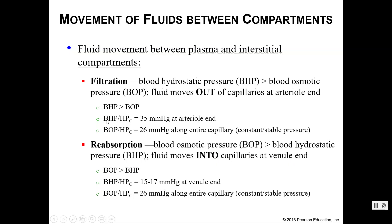Hydrostatic pressure changes along the capillary — for example, 35 mmHg at the arterial end dropping to about 15–17 at the venule end. But blood osmotic pressure does not change; it remains at 26 throughout. Blood osmotic pressure is created by proteins like albumin, which remain constant throughout the entire capillary.